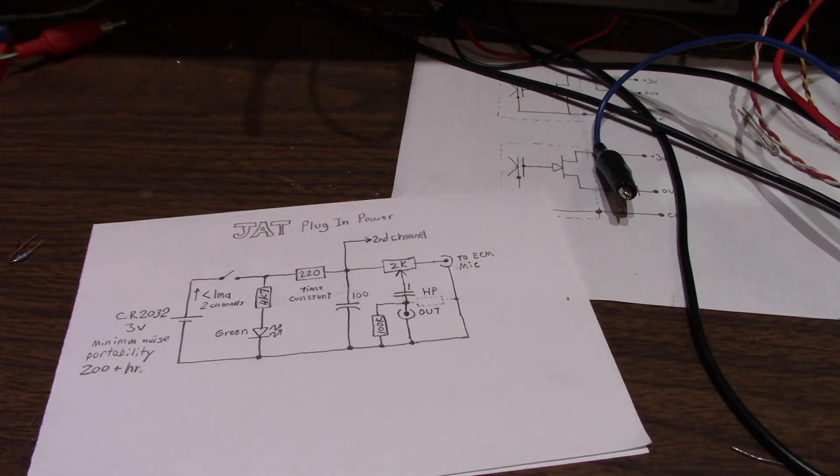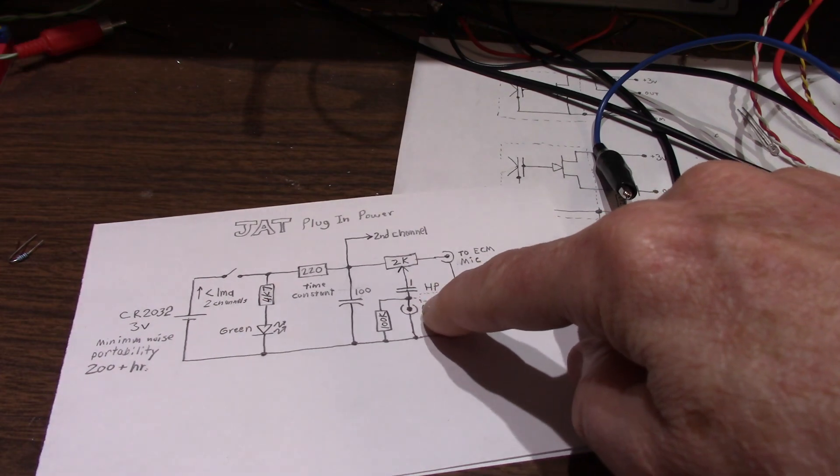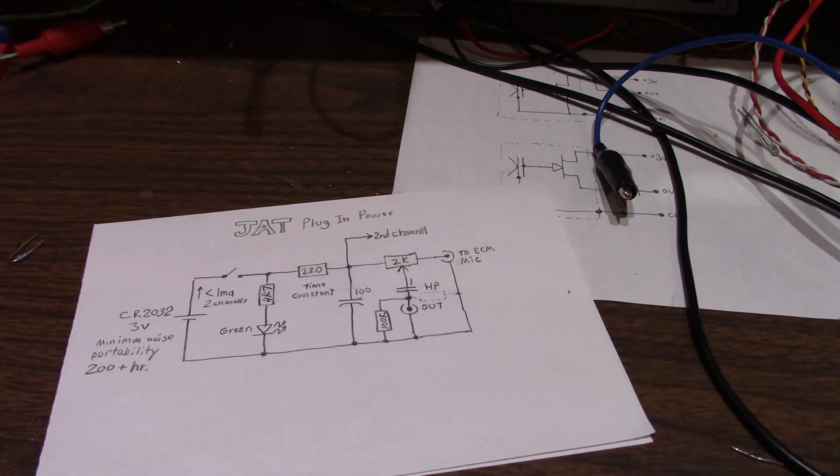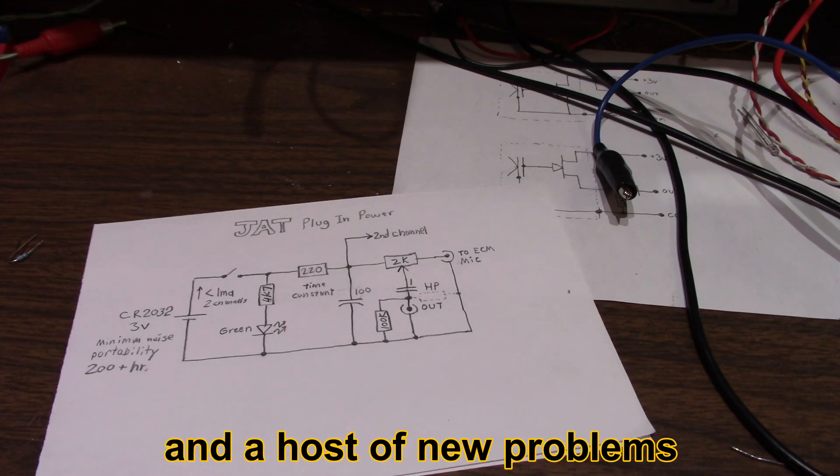Ideally, you don't want any DC going through that, but not much I can do there. I could put the volume control over here and just use a resistor. That would eliminate that noise, but it adds extra components.